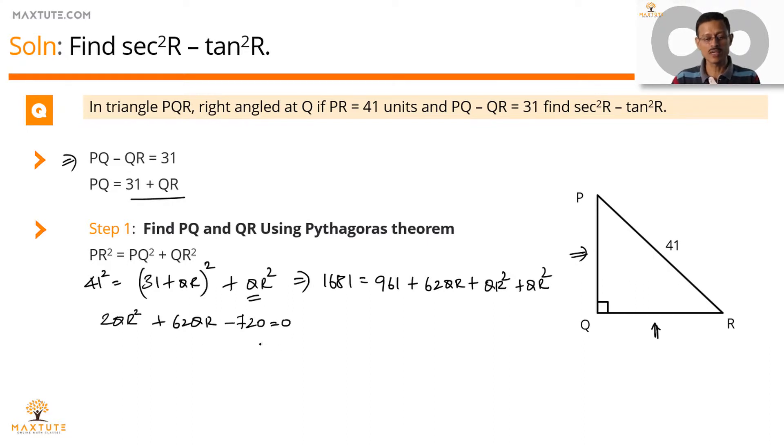We're going to be factorizing to find the value of QR. To make that easy, let's divide the entire equation by 2. So we'll be left with QR square plus 31 QR minus 360 is equal to 0.